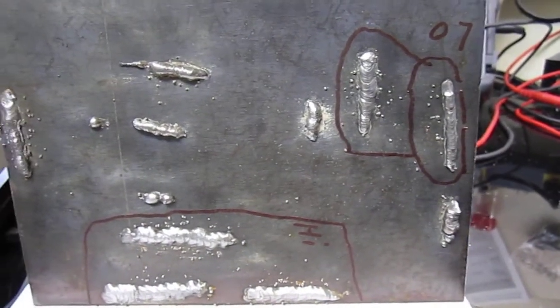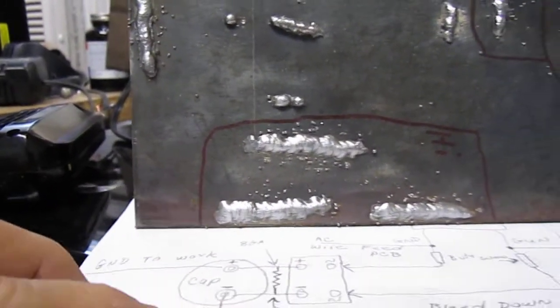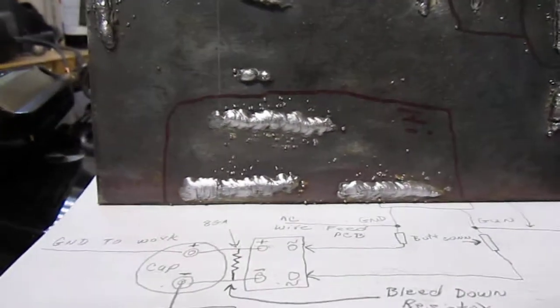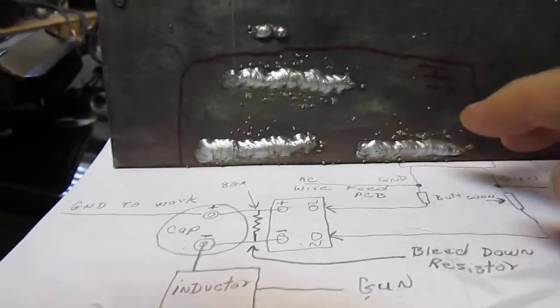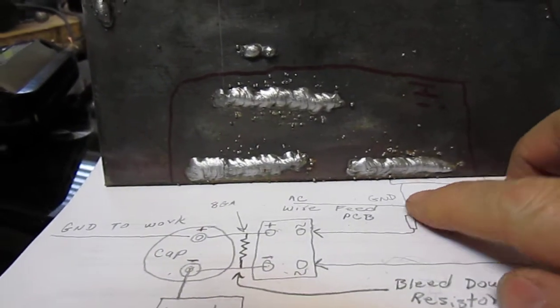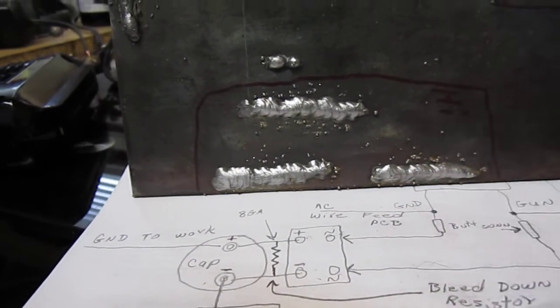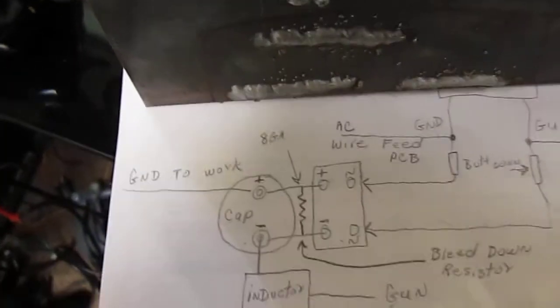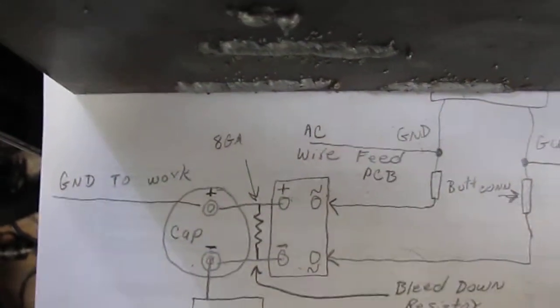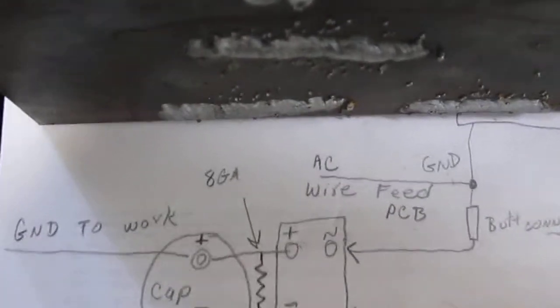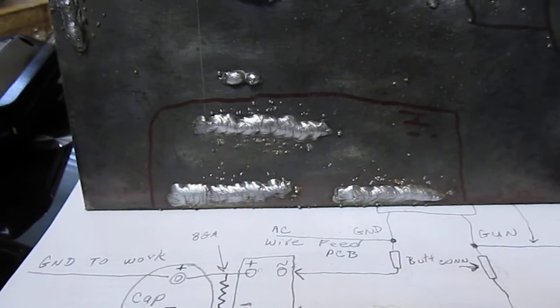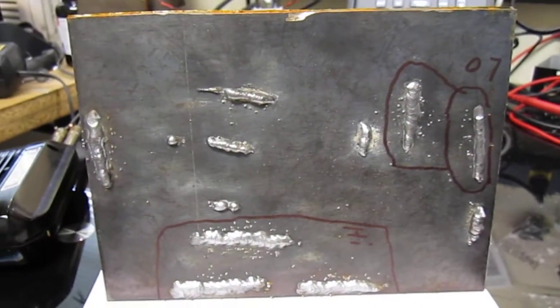These welds here I done, they're on high. This is quarter inch plate. These welds were done on high, on the high setting, and as you can see they're pretty well flat. The penetration is excellent on this, and that's the result of the conversion.